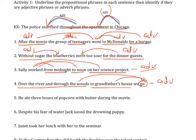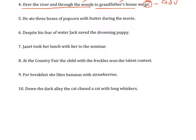Number five: He ate three boxes of popcorn with butter during the movie. He ate three boxes — what types of boxes? Of popcorn — adjective. Popcorn with butter — adjective. When did he eat? During the movie — adverb. So again: adjective phrase, adjective phrase, adverb phrase.